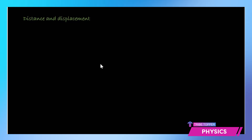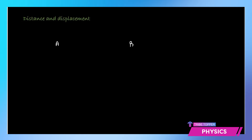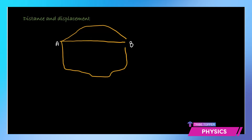The first thing we need to understand when we talk of motion is the terms distance and displacement. Suppose we go from point A to another point B — there can be three different routes. You might go from A via a longer path, straight from A to B, or take another even longer route. I'm marking them 1, 2, and 3.